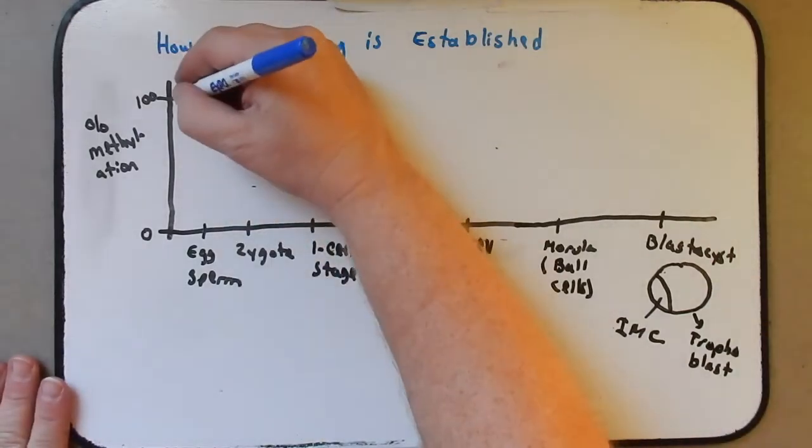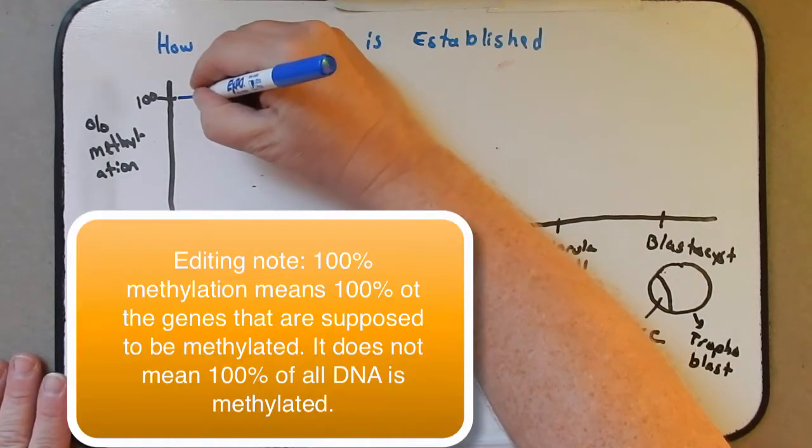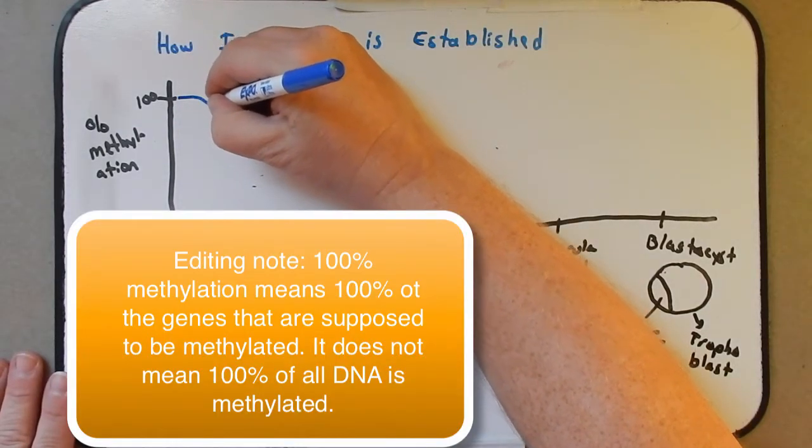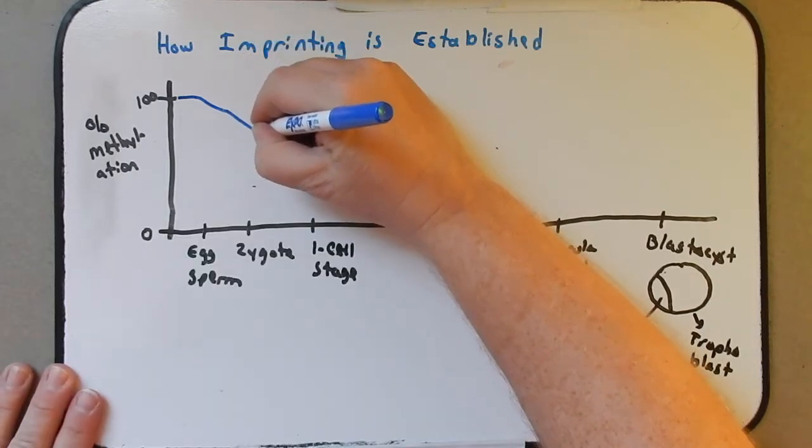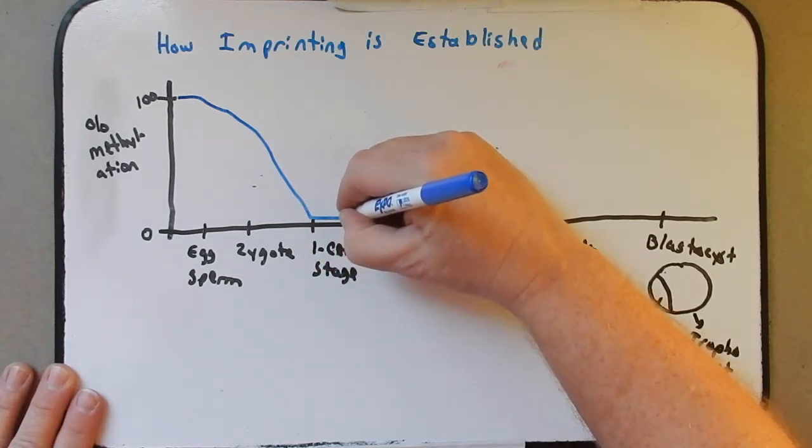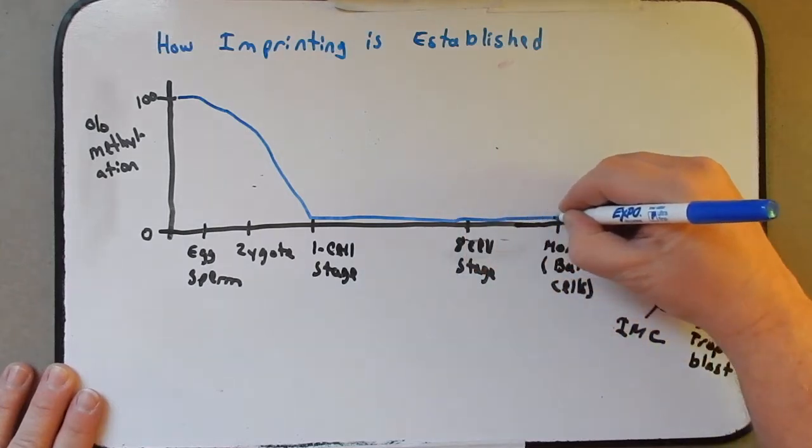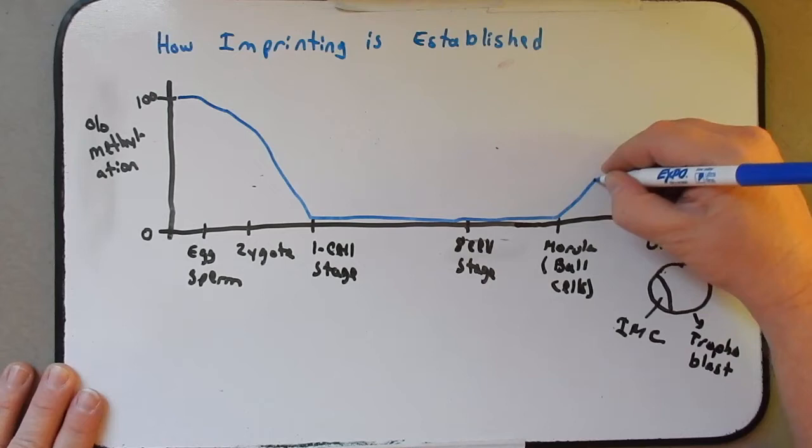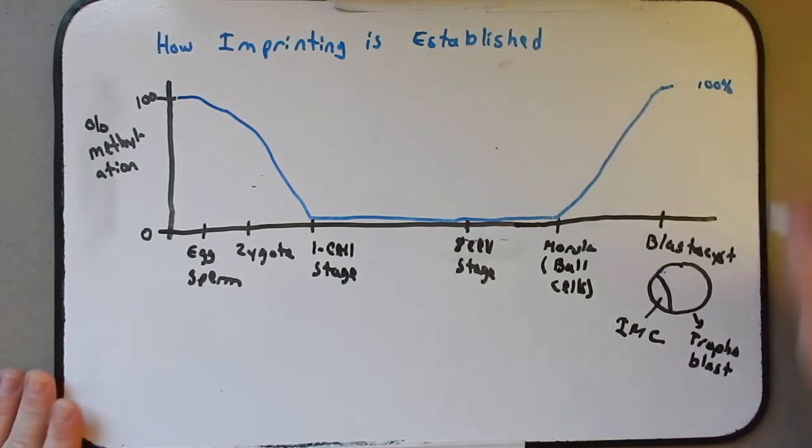Okay, so now let's look here at how sperm is demethylated by looking at the percent of methylation. In the sperm, it's at 100% methylated. It begins to drop off a little at that zygote, but not much. But between the zygote and the one cell stage, it plummets down to virtually zero. And then it will stay at around that zero percent mark, all the way till the morula stage. At the morula stage, it will begin to rise again. And by the time you hit the blastocyst stage, you're at 100% methylation again.